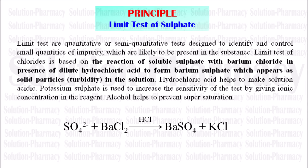Next, what is the principle of the limit test of sulfate? The principle is that the barium sulfate reagent used in this test contains barium chloride. This barium chloride, when it reacts with the soluble sulfate present in the standard solution and also present as an impurity in the sample solution, in the presence of dilute HCl, forms barium sulfate. Barium sulfate is a solid, insoluble particle, and due to this, the solution becomes turbid.